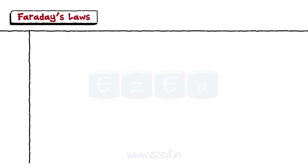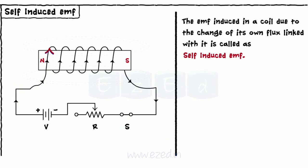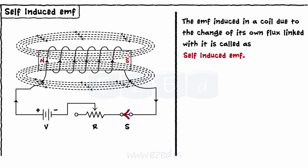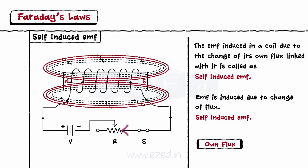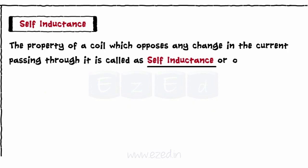The first type is self induced EMF. The EMF induced in a coil due to the change of its own flux linked with it is called as self induced EMF. Consider the current I flows through the coil when we close the switch S. This current produces some flux, say phi. If the magnitude of this current changes, then the flux generated also changes without any physical motion of a conductor. As the flux changes, it generates the EMF according to Faraday's law. As this EMF is induced by the own flux of a conductor, it is called as self induced EMF. The property of a coil which opposes any change in the current passing through it is called as self inductance or inductance. The coefficient of self inductance is given by L.